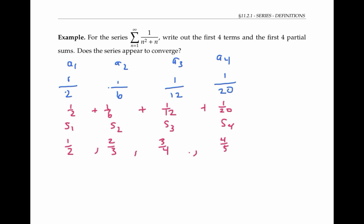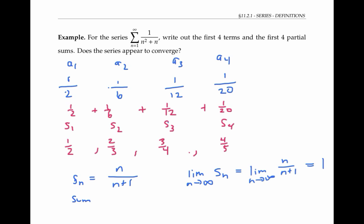There's a nice pattern in the S of n's: for the nth partial sum, the numerator is just n and the denominator is n plus one. So the limit as n goes to infinity of n over n plus one is just one. That means the sum of the infinite series is equal to one — by coincidence, the same sum as in the previous example.